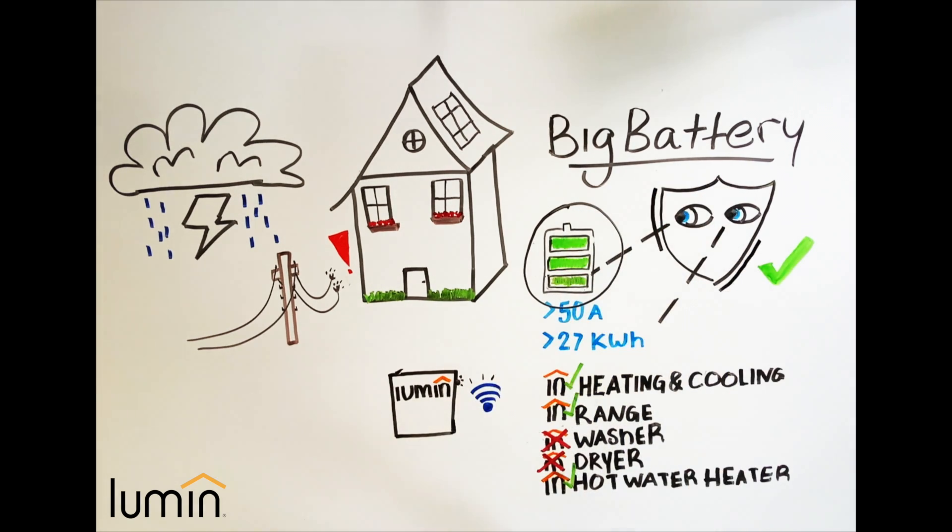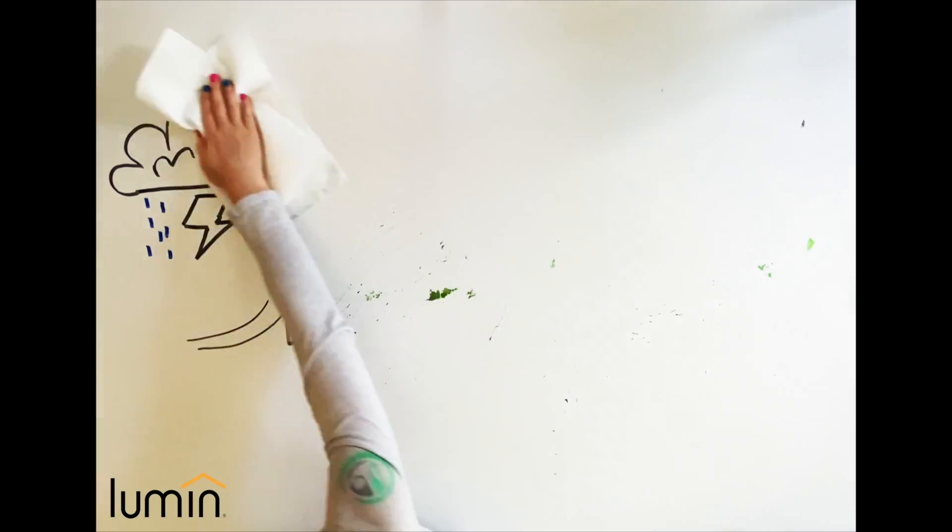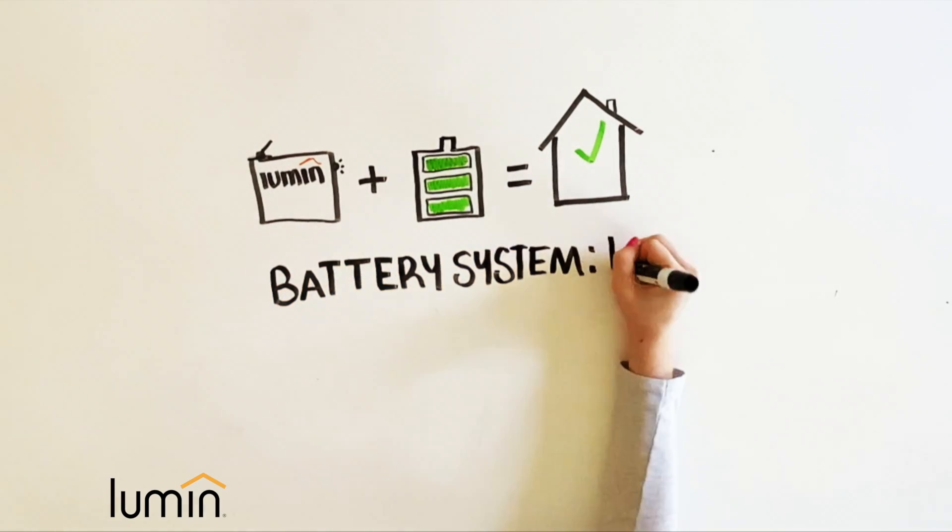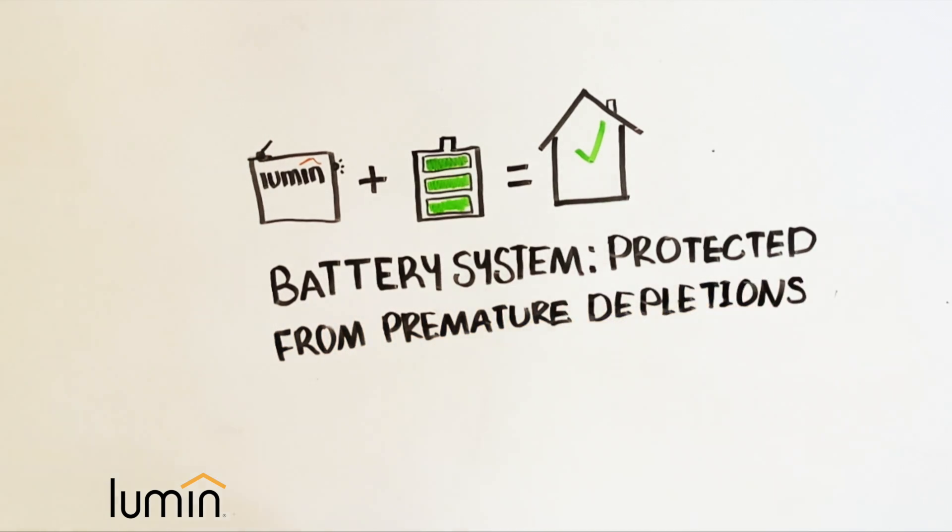What you end up with, with Lumen on the watch, is a battery system that is protected in the event of an outage so that we don't deplete the battery prematurely.